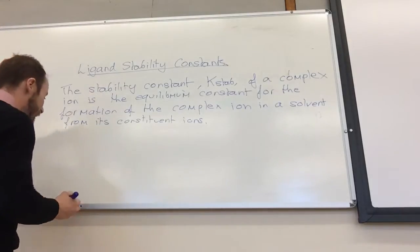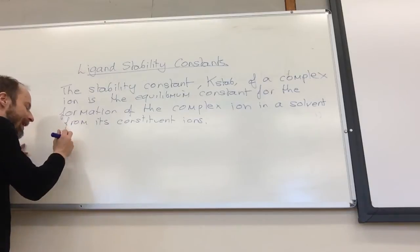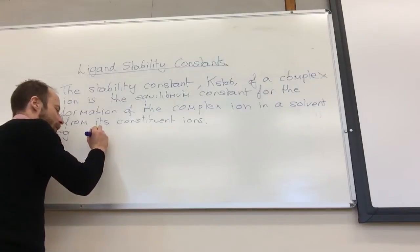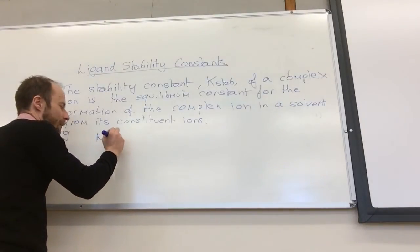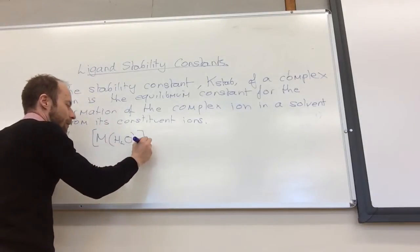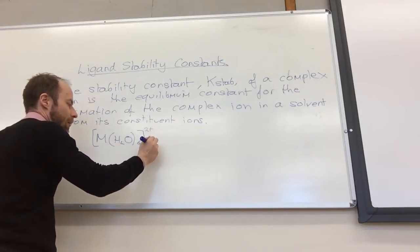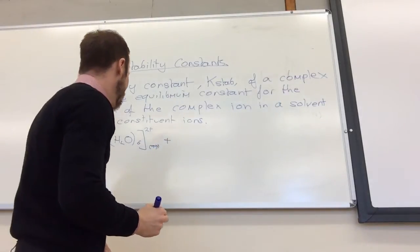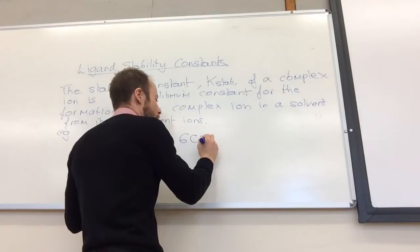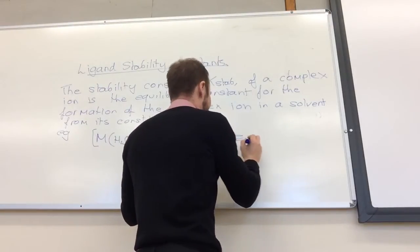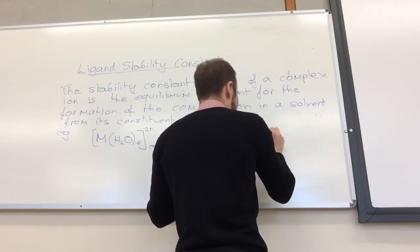So, if we do a general example, e.g., let's say I had some metal M which is surrounded by six water molecules, and it was being replaced by six chloride ions, and it was in equilibrium there, but with MCl6.